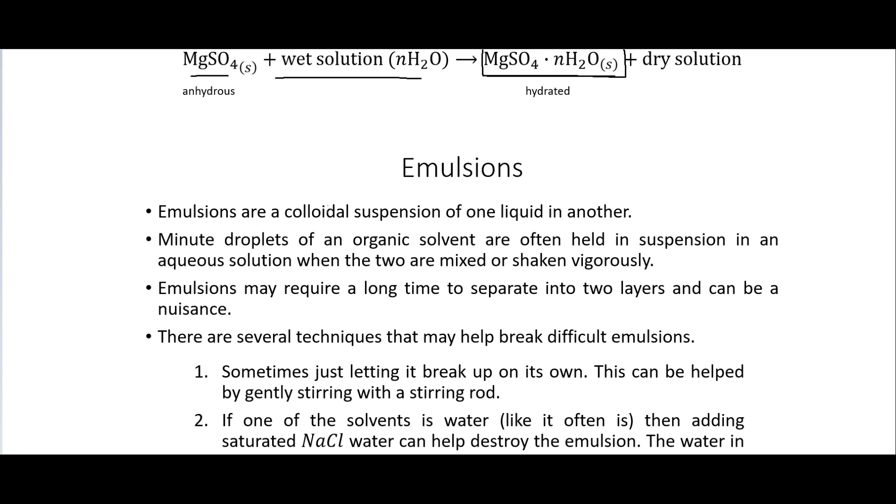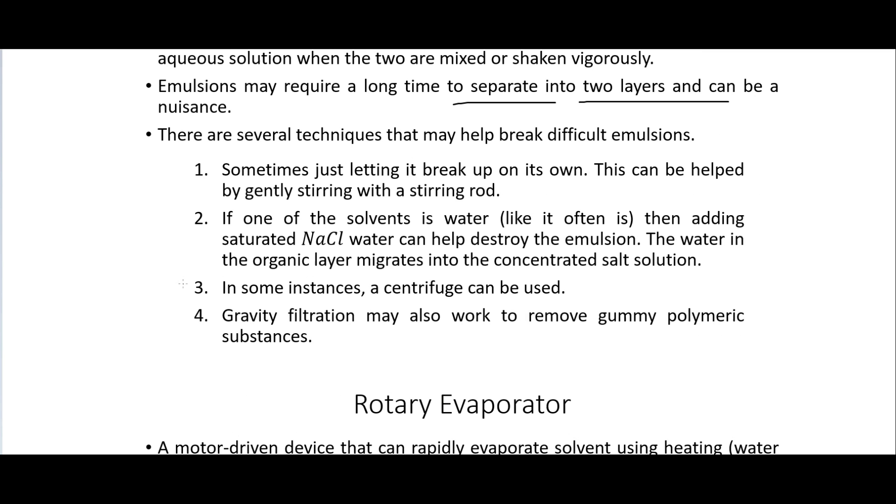Another thing we have to worry about are what are called emulsions. So these are colloidal suspensions of one liquid in another. So minute droplets of an organic solvent are often held in suspension in an aqueous solution when the two are mixed or shaken vigorously. So emulsions may require a long time to separate into two layers and can be a nuisance. There are a few techniques that can be helpful to break these difficult emulsions. So again just letting it set can break it on its own. This can be helped by gently stirring with a stirring rod. So if one of the solvents is water like it often is then adding saturated NaCl water can help destroy the emulsion. So the water in the organic layer migrates into the concentrated salt solution through osmosis. In some instances maybe a centrifuge can be used or gravity filtration could be used to try and remove those emulsions.